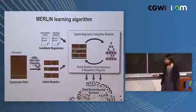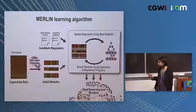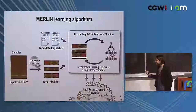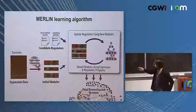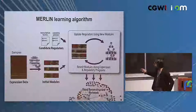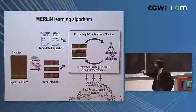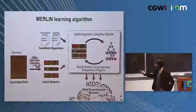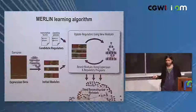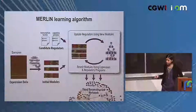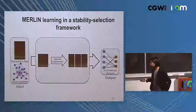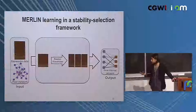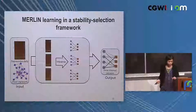That's how we specify P(G). The Merlin algorithm starts with an initial set of modules and candidate regulators, then iteratively revises the regulators for each gene given current module membership and relearns the modules. We also use a stability selection framework — subsampling the expression matrix, inferring different networks, and getting a confidence on each edge — which is really important for improving the quality of the networks we get.